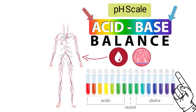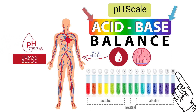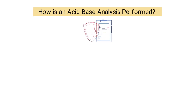Blood in the human body is typically slightly more alkaline than acidic. Therefore, a normal pH ranges from 7.35 to 7.45. The goal of the body is to maintain the blood pH as close to 7.4 as possible.